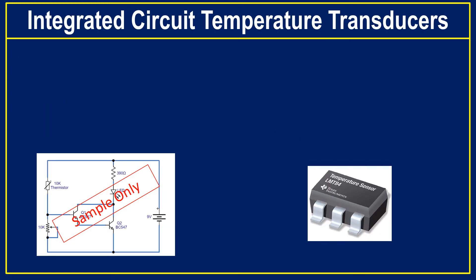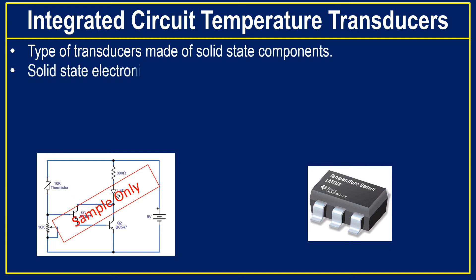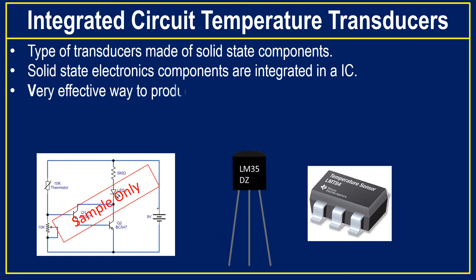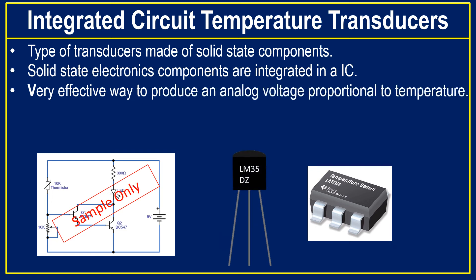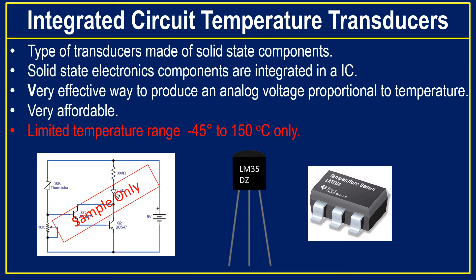Integrated circuit temperature transducers are a type of transducer made of solid state components. The solid state electronic components are integrated into an IC. IC temperature sensors are a very effective way to produce an analog voltage proportional to the temperature. These IC temperature sensors are very affordable, but they have a limited temperature range of minus 45 degrees to 150 degrees centigrade.